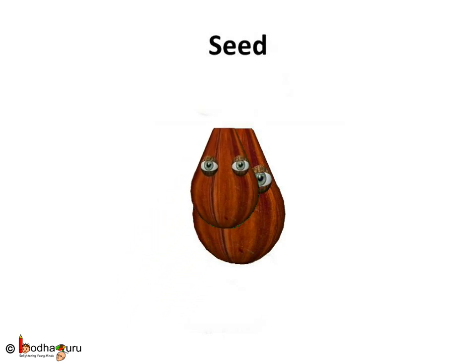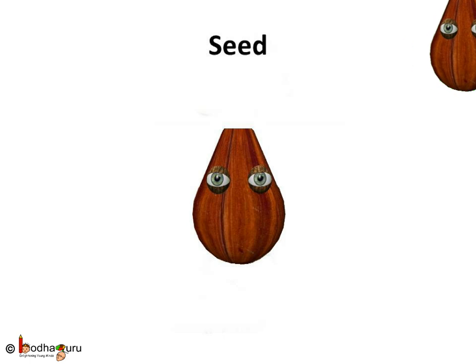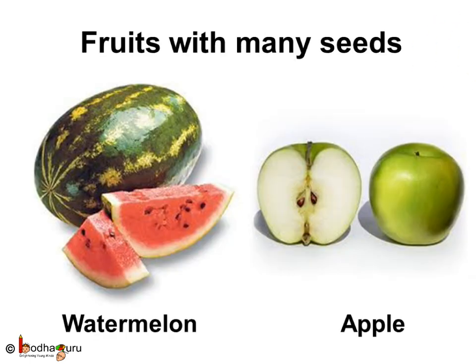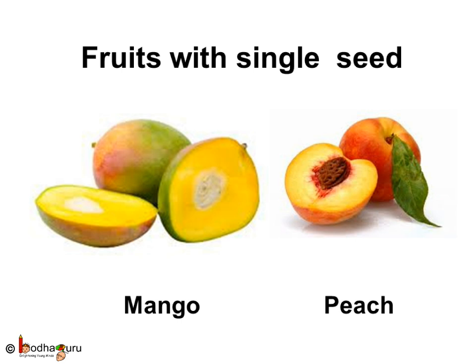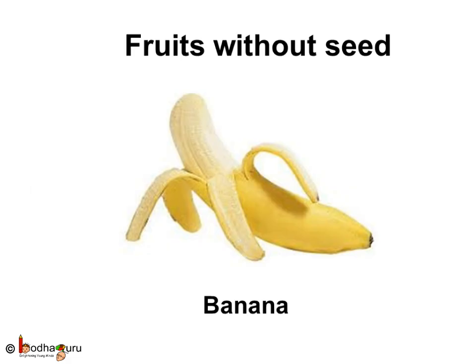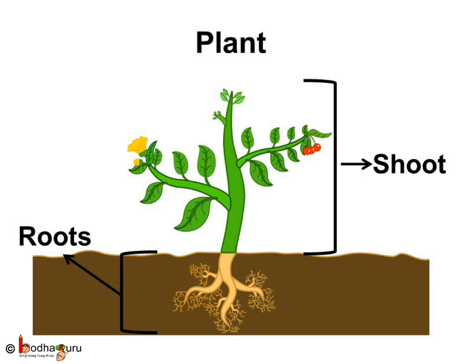Whenever you eat mangoes or apples, you must have found seeds in them. Some fruits have big seeds while some have smaller ones. Some have plenty of seeds like watermelon and apple. Some have very few or possibly a single seed like mango or peach. And some fruits have no seeds at all, like the banana. To summarize: plants have two parts — roots which are below the ground, and shoot which is above the ground. Shoot includes stem or trunk connected to branches. The leaves and flowers are attached to branches, and the flowers turn into fruits, most of which have seeds.